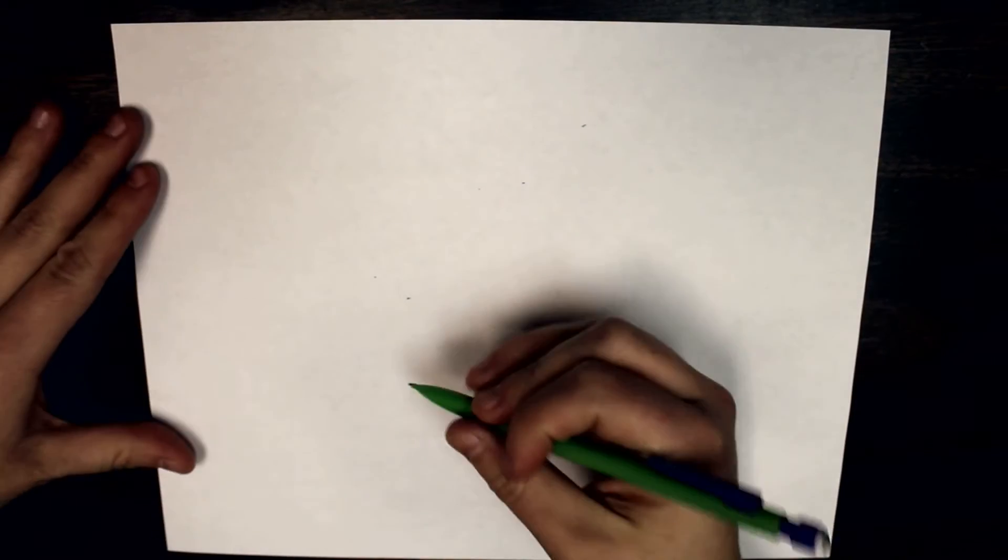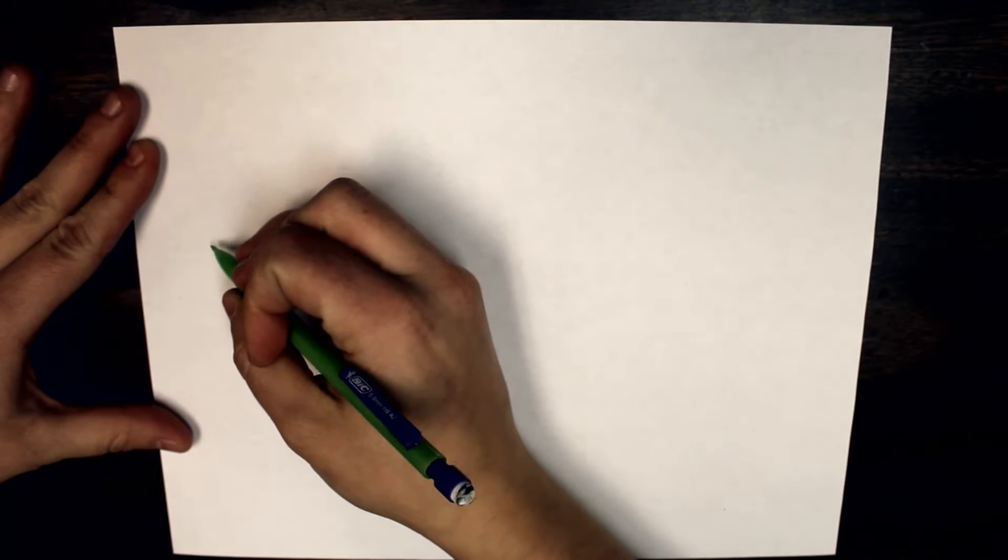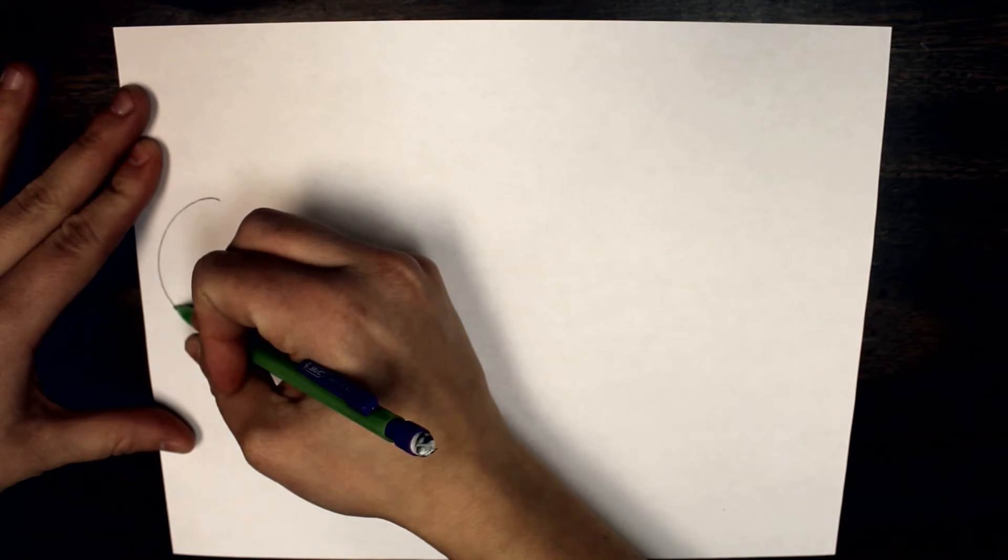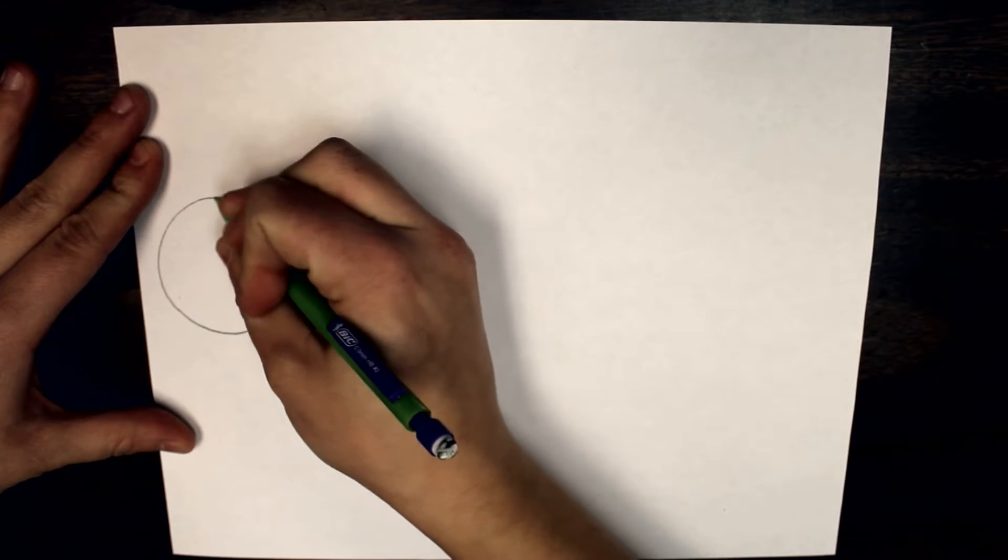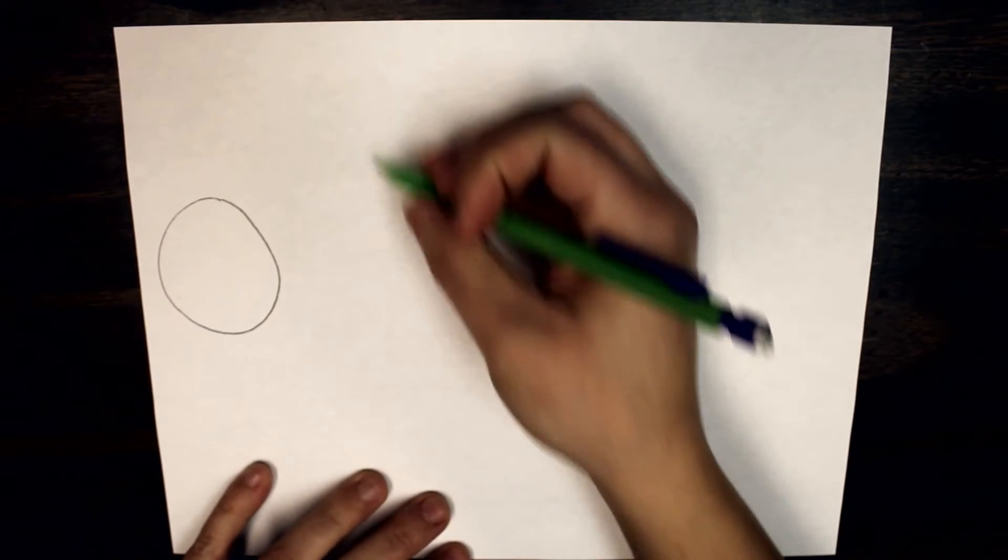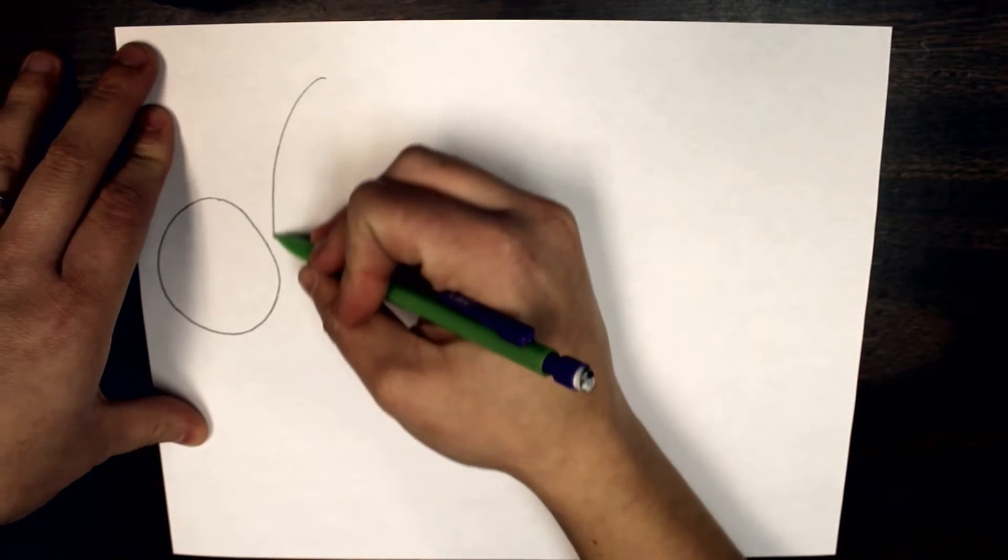Today we're going to be drawing a caterpillar together. We'll start on one side of our paper and draw a circle. We want this to be close to the edge of our paper there so we have room to make a bunch of body.